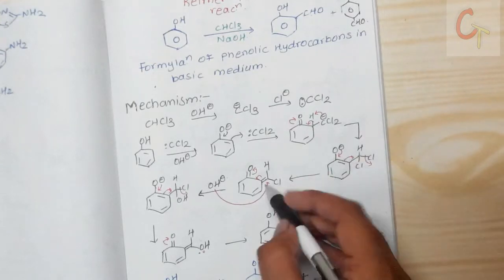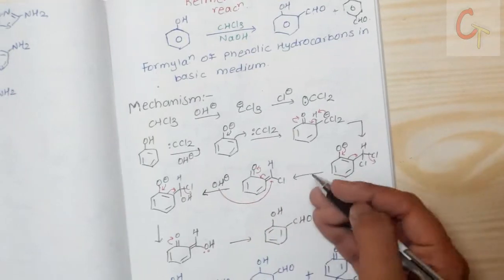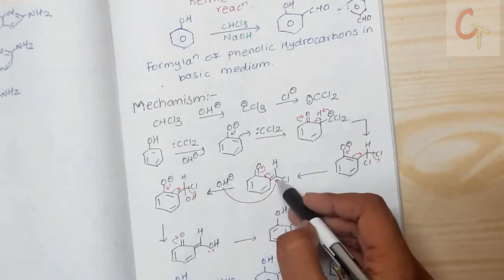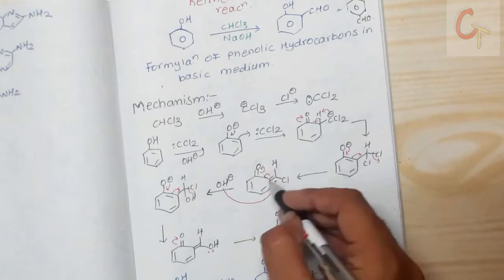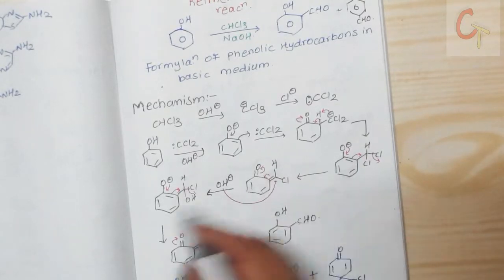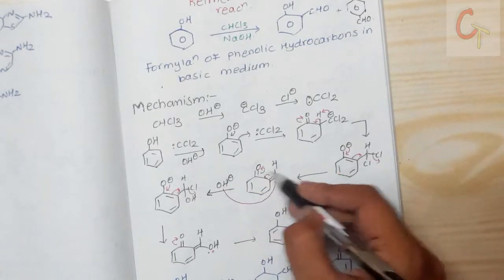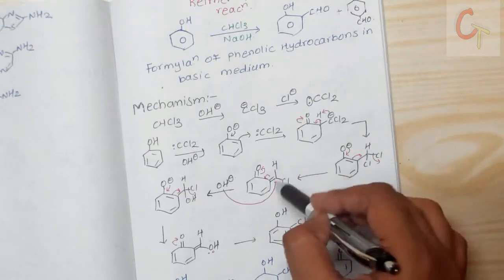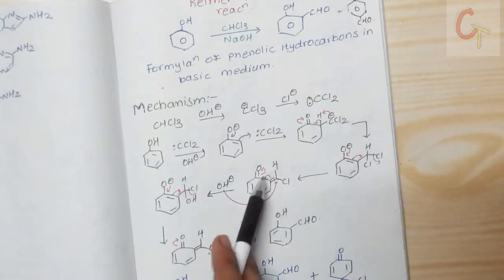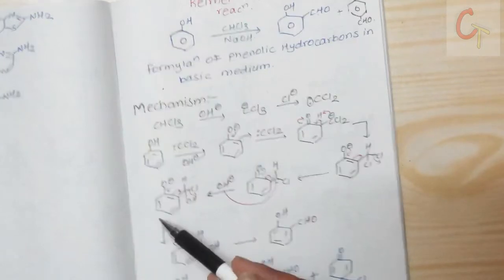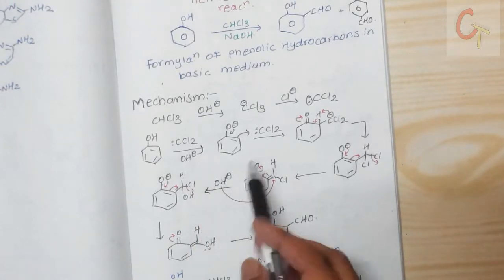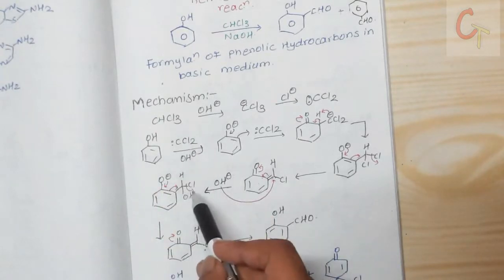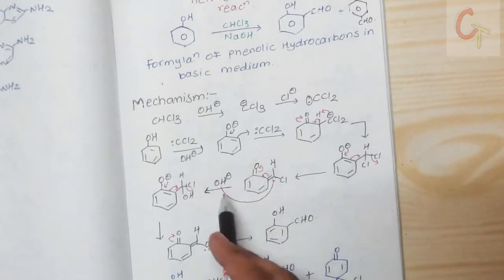At the same time, the base attacks as a nucleophile at the carbon bearing the CHCl group. The double bond migrates to oxygen, creating a negative charge. We started with three chlorines in chloroform, but in the product there are no chlorines — all three chlorines are eliminated. The base plays a dual role: acting both as a base and as a nucleophile.